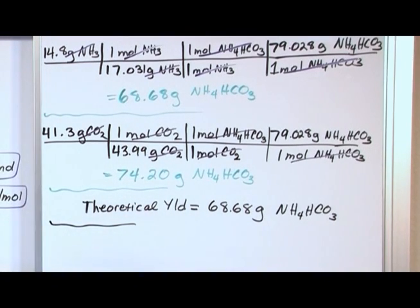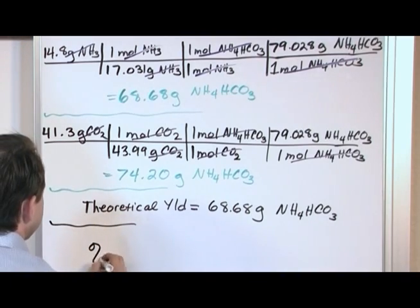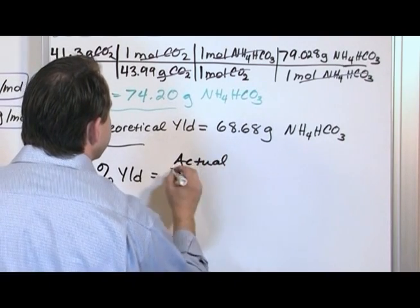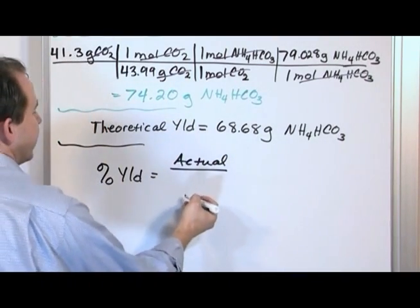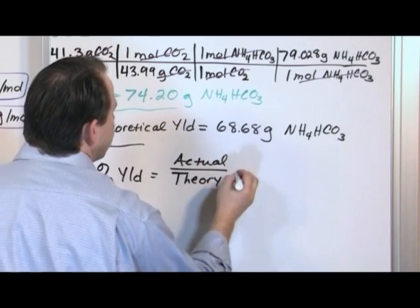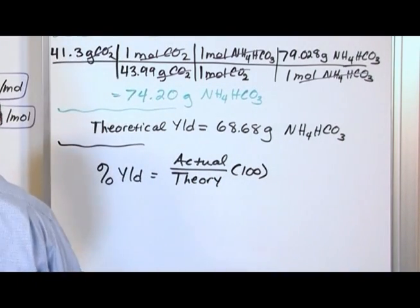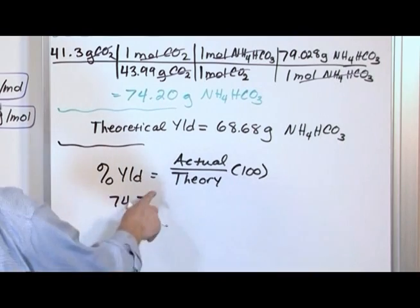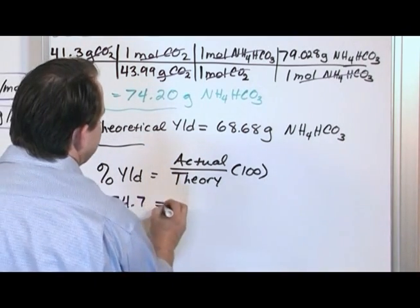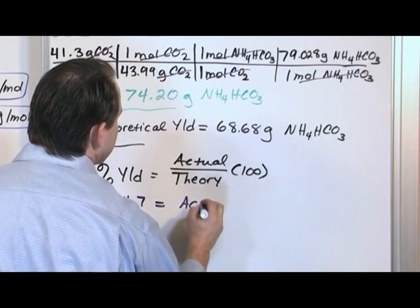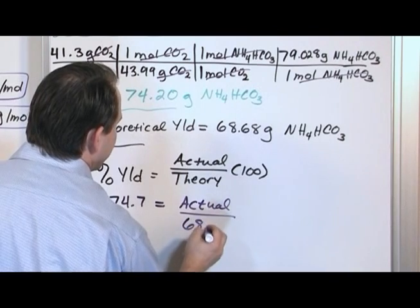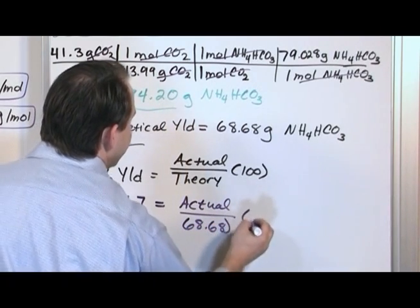The problem asked for the actual yield. The percent yield equals the actual grams produced divided by the theoretical yield times 100. The percent yield given in the problem is 74.7, the actual is what we're trying to find, and the theoretical yield we just calculated is 68.68 grams, multiplied by 100.